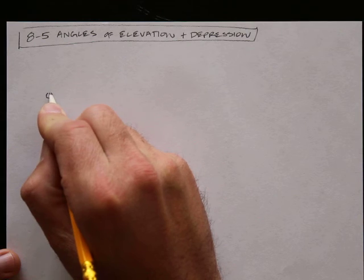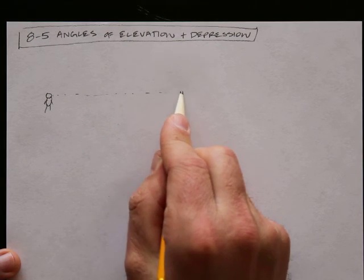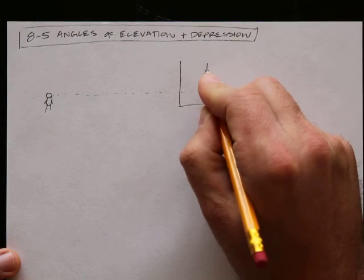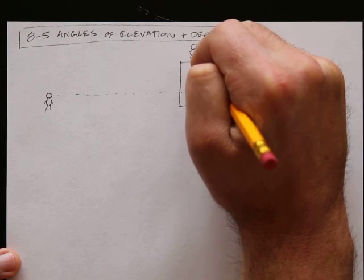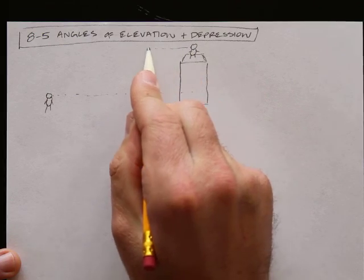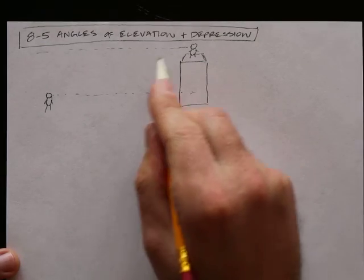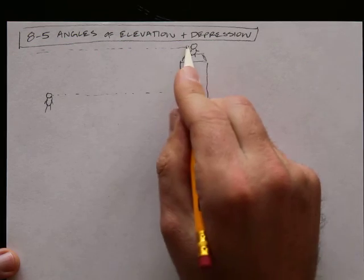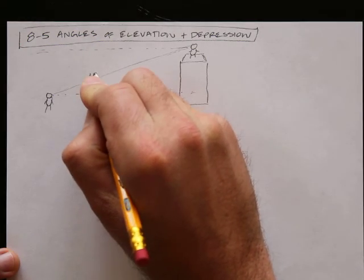We're going to draw a little guy down here, and he's looking over here like this. And then here's a guy on a box up here. He's on this box, standing here like that, and he's looking over here. So they're both looking off horizontally right there. Now, if they were to look at one another, this is called the line of sight.